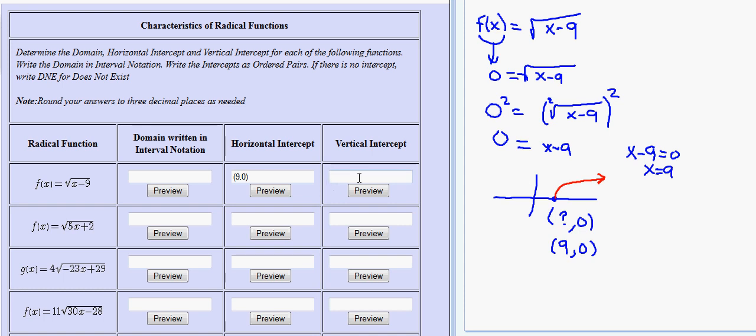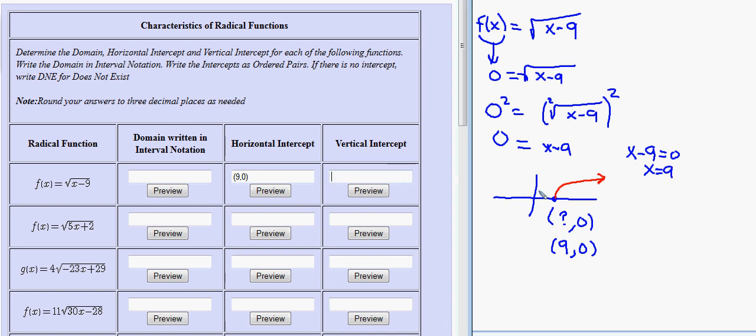I can actually answer the vertical intercept question right now. The fact that it starts here and goes to the right forever means it's never going to cross the vertical axis. If it's never going to cross the vertical axis then there's never going to be a vertical intercept. The directions are if there is no intercept write DNE for does not exist.